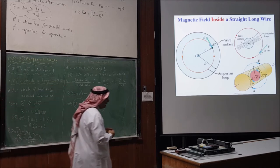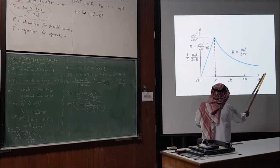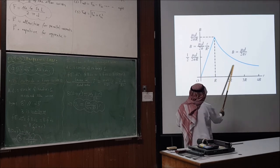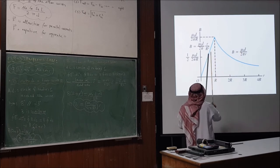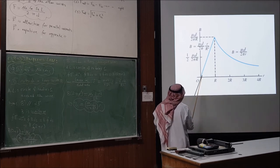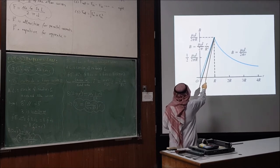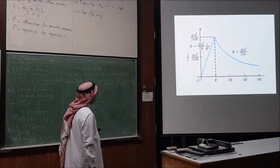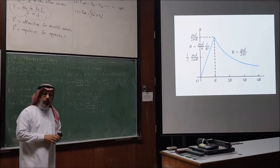Graphically: inside the wire (r < R), B increases linearly from zero to its maximum at the surface. Outside the wire (r > R), B decreases as 1/r. The field peaks at the surface r = R. This is the complete application of Ampere's law to find the magnetic field inside and outside an infinitely long straight wire.